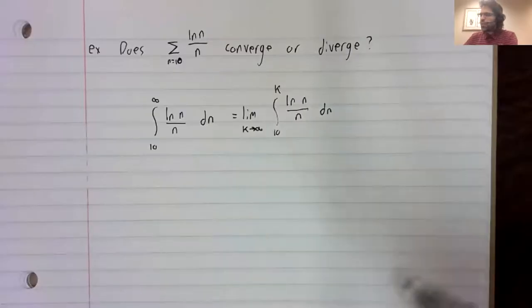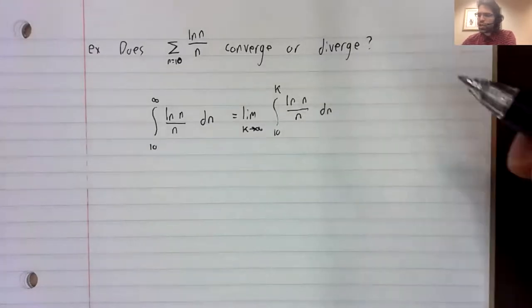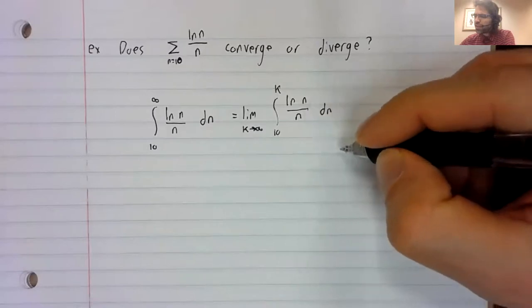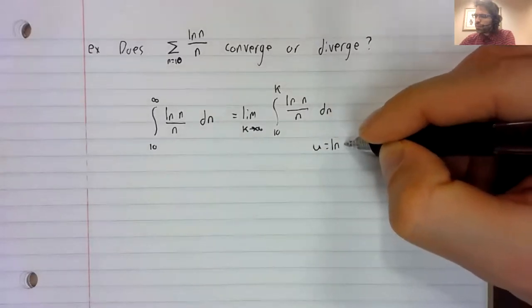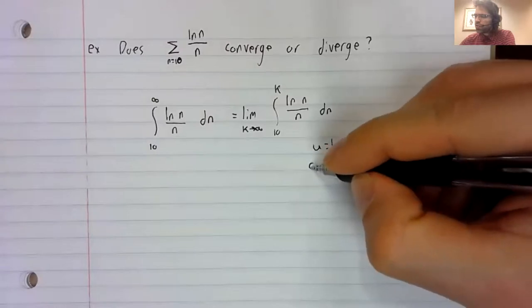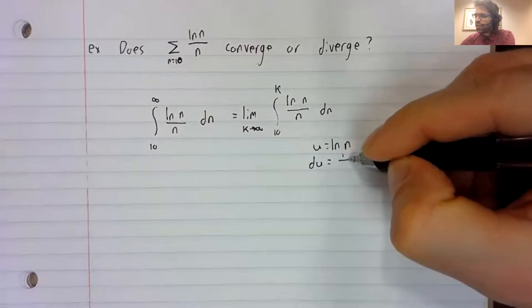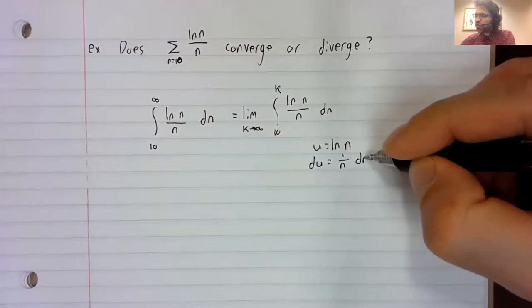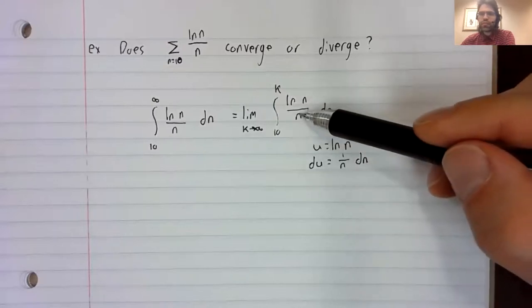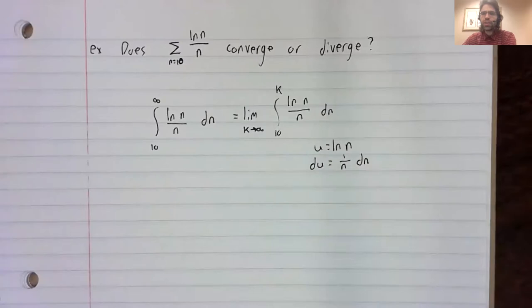And we see we have a natural log, and we have division by n. And that might give us a clue about how to proceed. Because the derivative of the natural log gives us a one over n term like that.